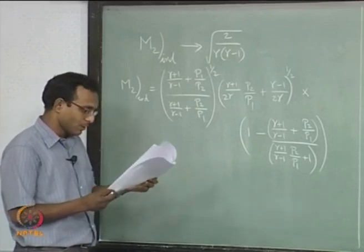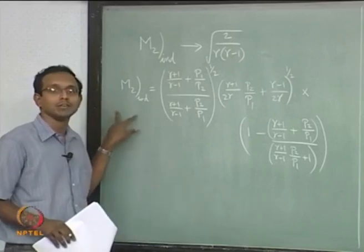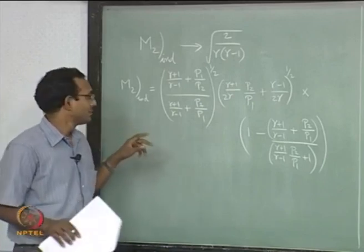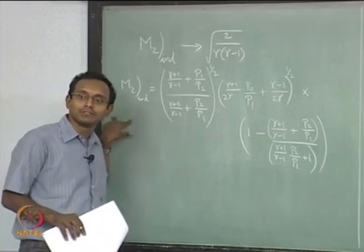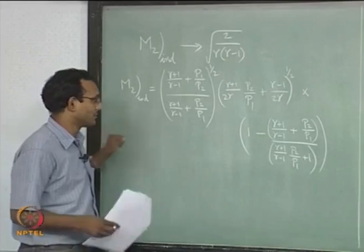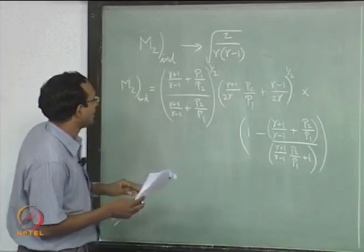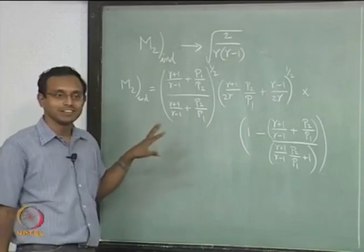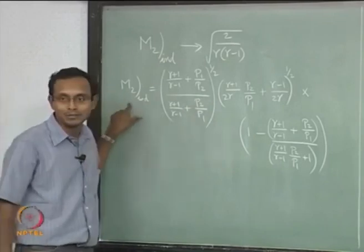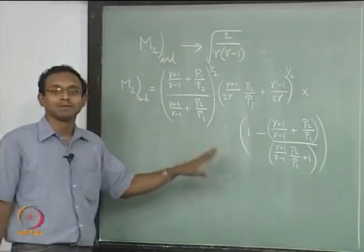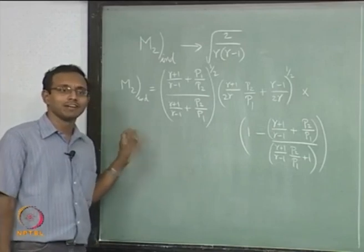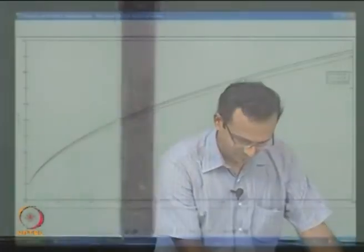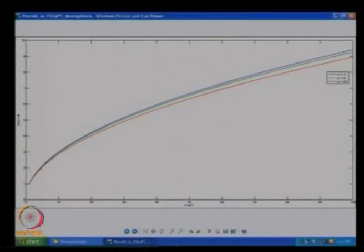We want to find the minimum P2/P1 such that the flow goes to M equal to 1 behind the shock. I tried solving the expression analytically, but it is not easy to invert and write P2/P1 in terms of M2 induced. So we will use the graphical method — it is not critical to solve it algebraically for this course. We will go to the screen.